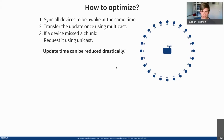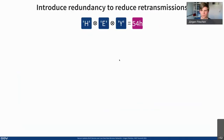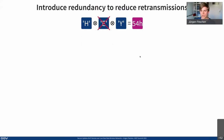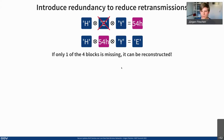We can do even better by introducing redundancy to reduce the likelihood of retransmission. Here we have three blocks — ASCII H, ASCII E, and ASCII Y. If you XOR all three blocks together, you get 0x54. If during transmission you lose E, you can XOR the remaining blocks with 0x54 and recover E. So one block can be reconstructed if only one of the four blocks is missing, using the XOR operation.